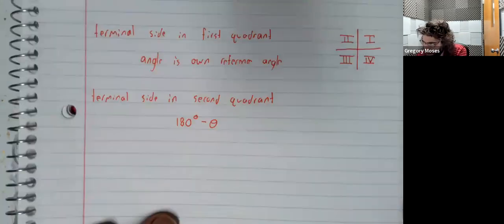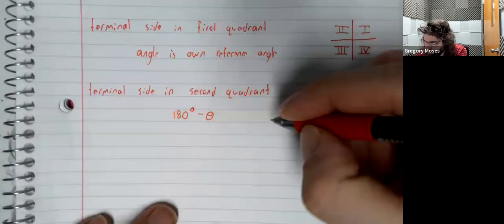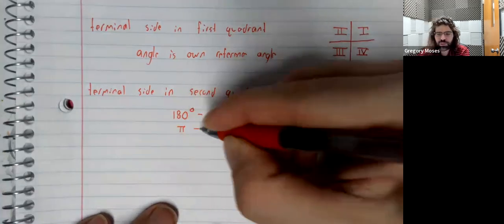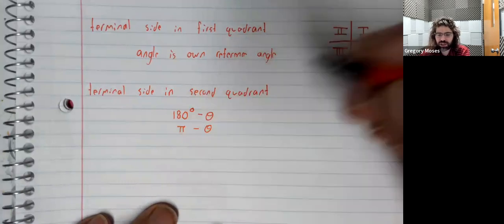And then if you're in radians, 180 degrees is π radians, so it's π minus the angle.